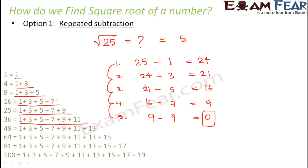So you see just the inverse thing. Since square root is inverse of squares, to find squares we added odd numbers. So to get square root we subtract odd numbers. Perfect.